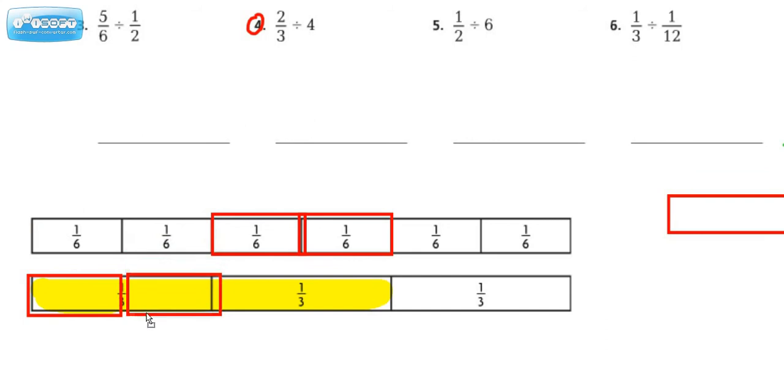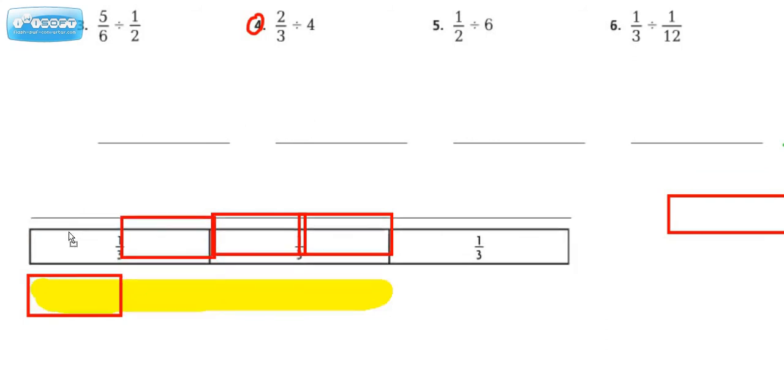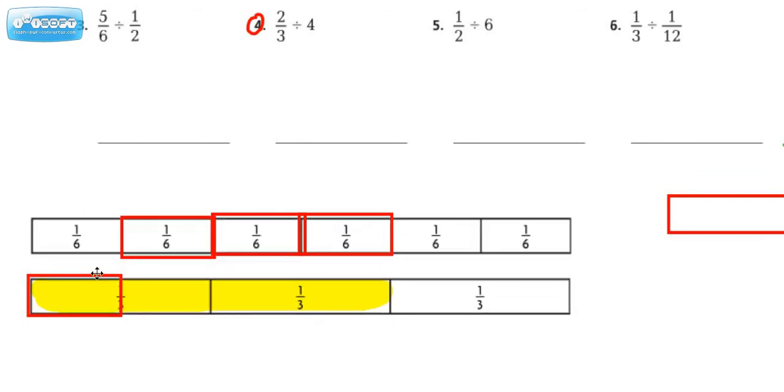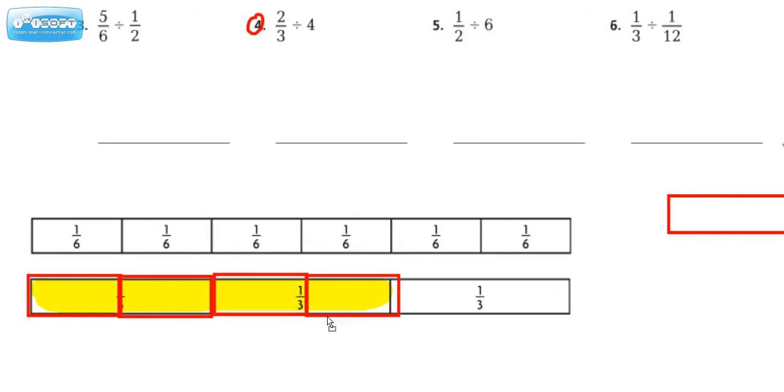So if we break the 2 thirds up into 4 equal groups, it looks like we have 1 sixth here for the first red box, 2 sixths, 3 sixths, right? And 4 of those, right? So we broke it up into 4 groups. Now the question is, how much is this value worth, this one box? What is it?